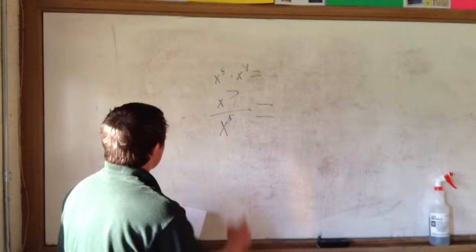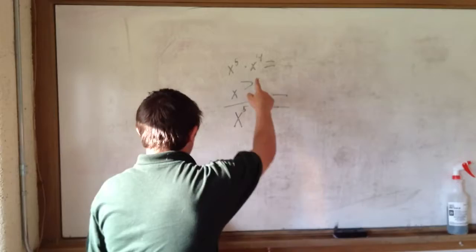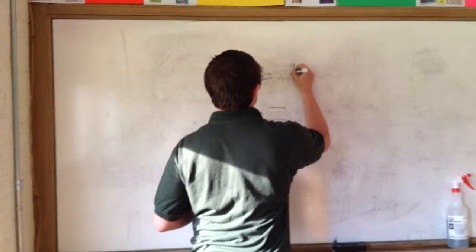For a multiplication example, we have x to the fifth times x to the fourth, which equals x to the ninth. You just have to add the exponents.